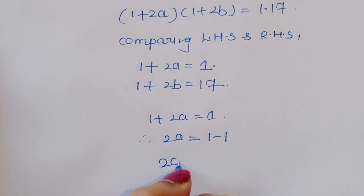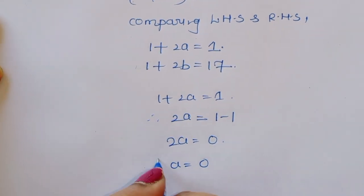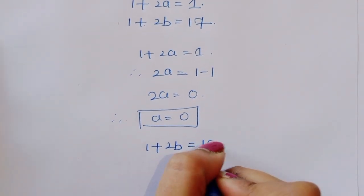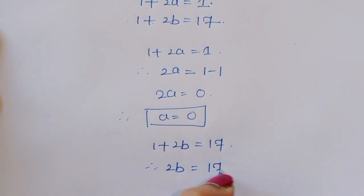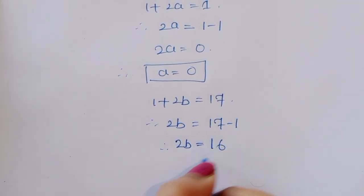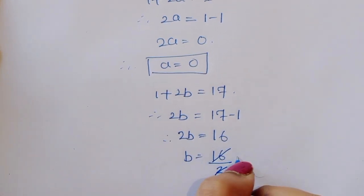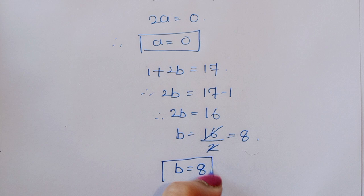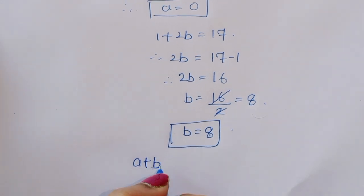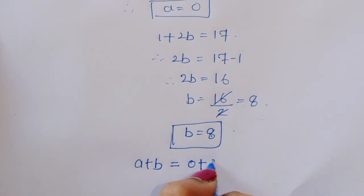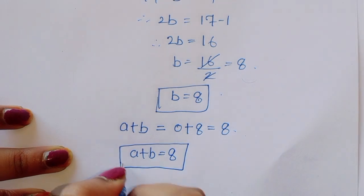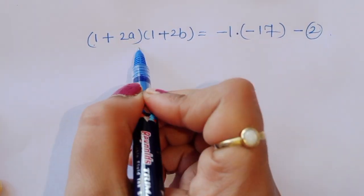From 1 plus 2a is equal to 1, therefore 2a is equal to 0, so a is equal to 0. And from 1 plus 2b is equal to 17, therefore 2b is equal to 16, so b is equal to 8. Therefore a plus b is equal to 0 plus 8 is equal to 8. This is the first solution.